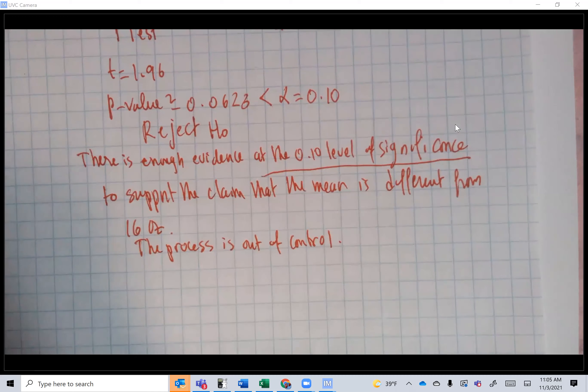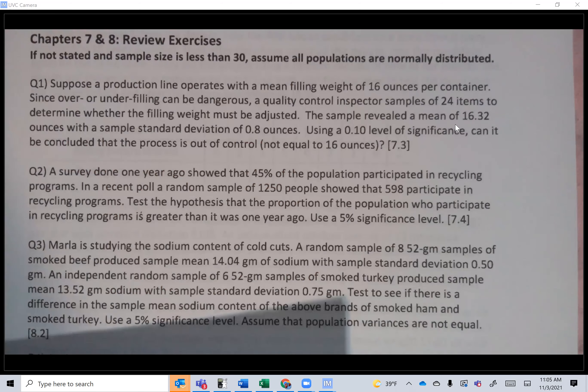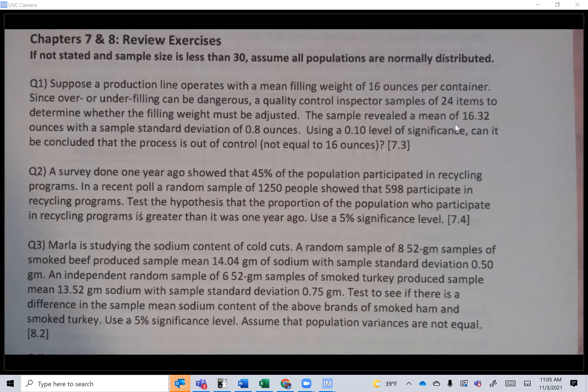So that is number one. Let's go to number two. A survey done one year ago showed that 45% of the population participated in recycling programs. In a recent poll, a random sample of 1,250 people showed that 598 participate in recycling programs. Test the hypothesis that the proportion is greater than it was one year ago. I need your help. How do you state the null and alternative hypothesis?